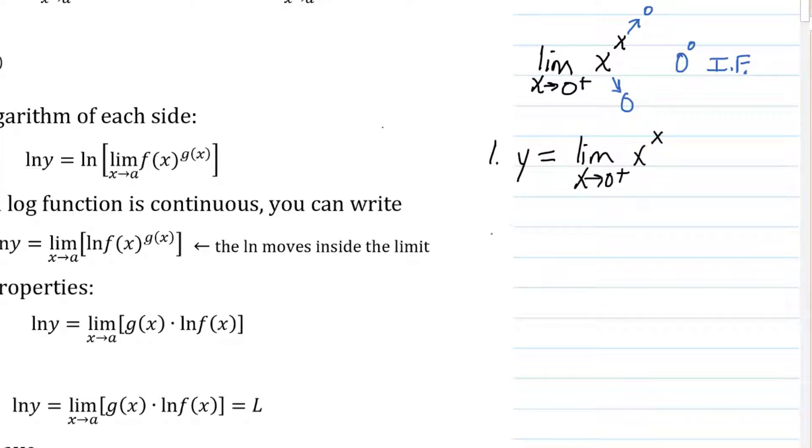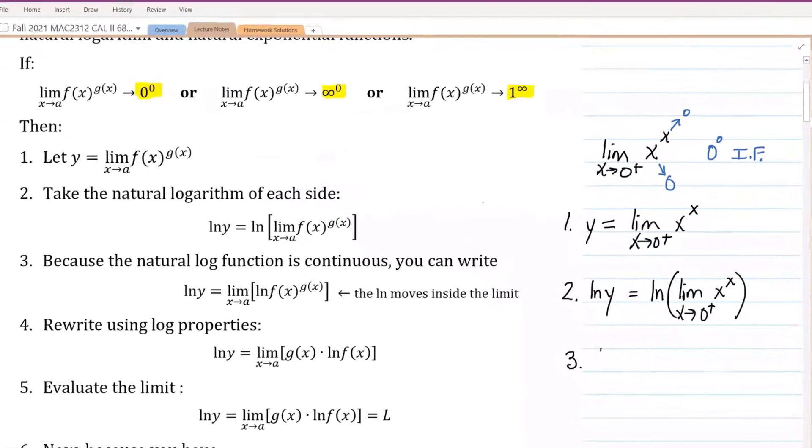And because the natural log is a continuous function, the limit of the natural log is the same as the natural log of the limit. You can interchange those. So the third step is always to just bring that limit out front of the natural log.